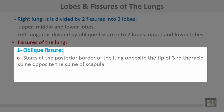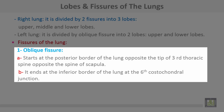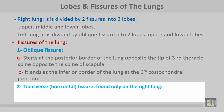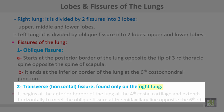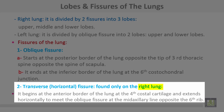Fissures of the lung: the oblique fissure starts at the posterior border of the lung opposite the tip of the third thoracic spine, or opposite the spine of the scapula. It ends at the inferior border of the lung at the sixth costochondral junction. The transverse or horizontal fissure is found only on the right lung. It begins at the anterior border of the lung at the fourth costal cartilage and extends horizontally to meet the oblique fissure at the mid-axillary line opposite the fifth rib.